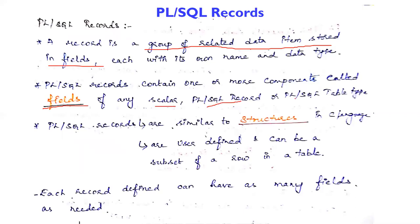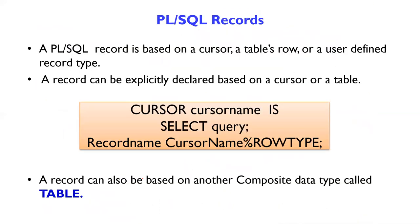PL/SQL records contain one or more components called fields. A field is a scalar component. PL/SQL records are similar to structures in C language. They are user-defined and can be a subset of a row in a table. Each record can have many fields — for example, employee name, phone number, age, and all employee details. PL/SQL records can also be associated with a cursor.